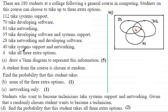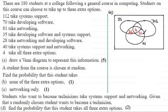Working back up: 40 take systems support and networking, meaning there are 40 across these two regions. Don't make the mistake of putting 40 in just the overlap-only section, because that would be 40 doing systems support and networking only. So we've got 40 across these two regions, giving us 36 there. Then 28 take networking and developing software, so there are 28 across those two regions, leaving us with 24 in the networking-and-DS-only section.